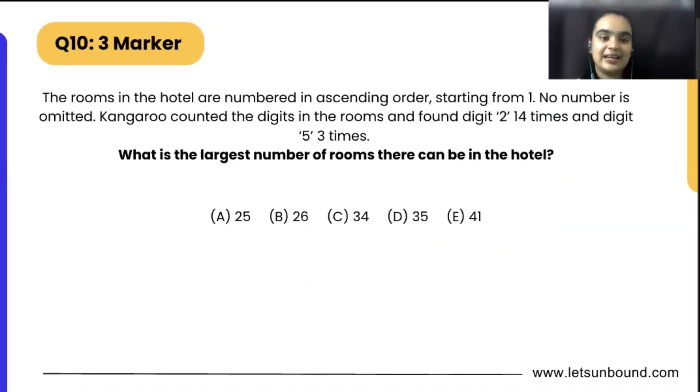The rooms in the hotel are arranged in ascending order starting from 1. So they are in ascending order, starting from 1, so it can be 1, 2, 3, 4, 5, 6, 7, 8, 9, 10 like that. No number is omitted, so basically they are in order. Then Kangaroo counted the digits of the room.